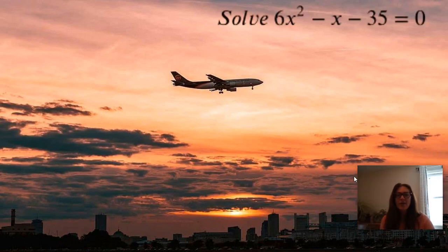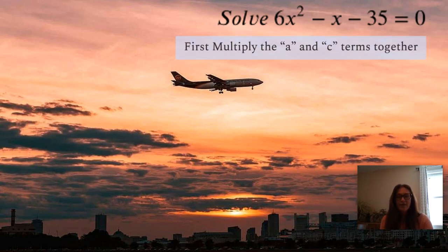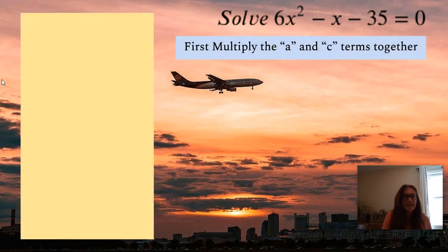All right, so let's do another example. This one is a little bit different at the end, and you'll see why. All right, so we're going to do the same thing. We're going to take the a and c terms and multiply them together. So we know that the coefficient of x squared is 6. The constant term is negative 35.